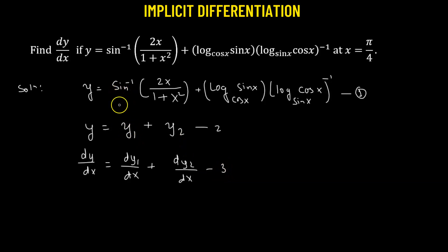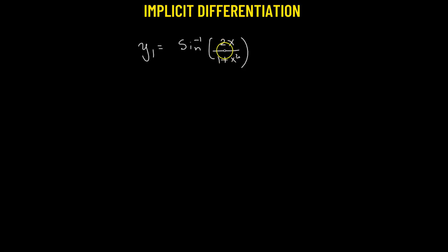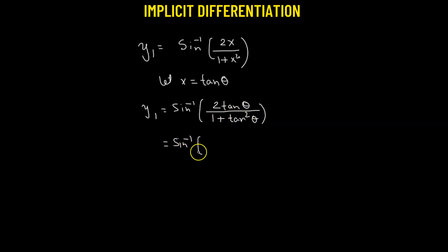Let's begin with y1, where y1 equals sine inverse of 2x over (1 + x²). Rather than taking the derivative directly, we can use a trigonometric substitution. We let x equal tangent of θ, so that y1 becomes sine inverse of 2tan θ divided by (1 + tan²θ). Using the identity 1 + tan²θ = sec²θ, we get 2tan θ over sec²θ.